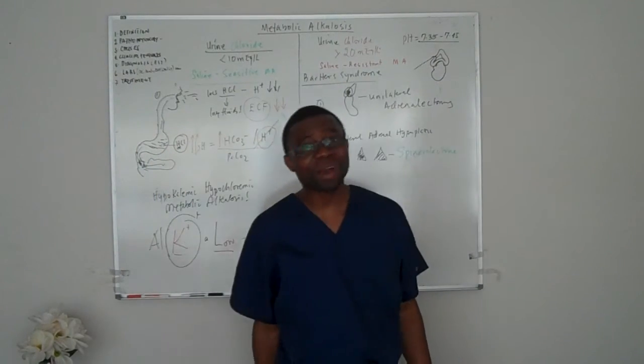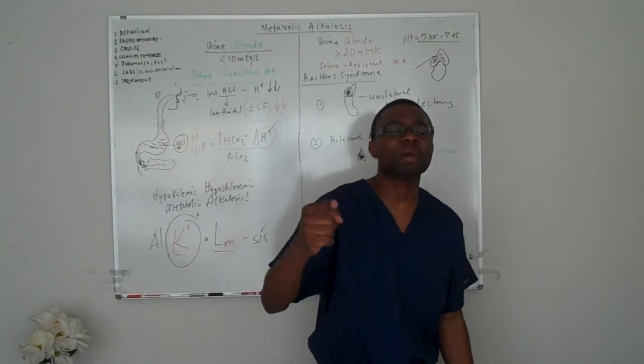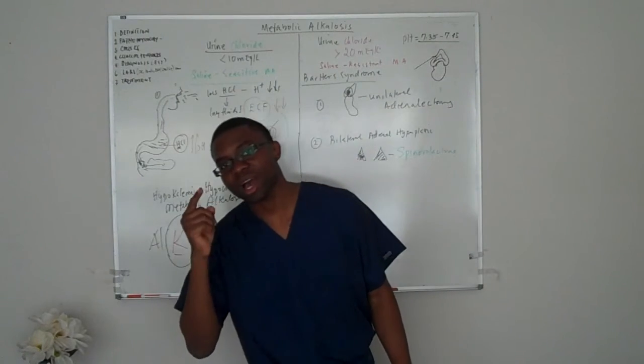Most people will come in with too much aldosterone because they have an adrenal adenoma or bilateral adrenal hyperplasia. Or, do you think everybody vomits? Yeah. Always remember medicine: the most common things are common.